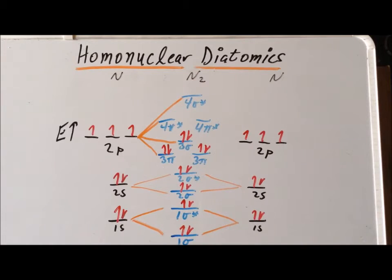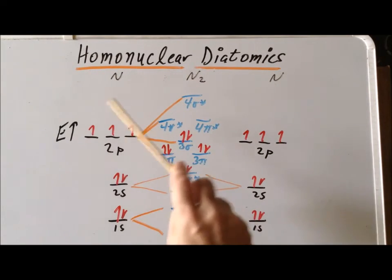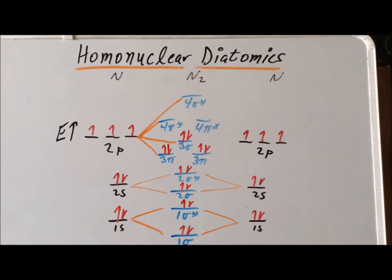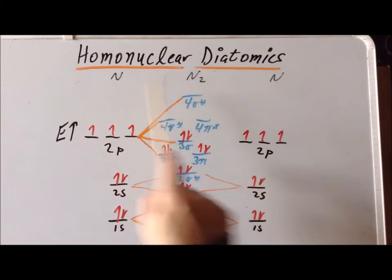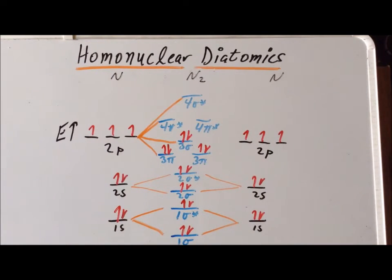So we see that once we have the carbide ion MO diagram, we can almost immediately convert it into the dinitrogen MO diagram. We just have to make sure that we remember to add the two additional electrons. In the case of dinitrogen, these are already present in the atoms, whereas in the case of carbide, those are provided externally to the system to convert it from C2 to C2 2-.